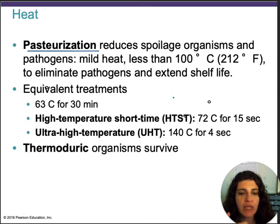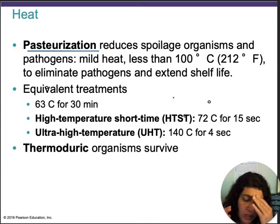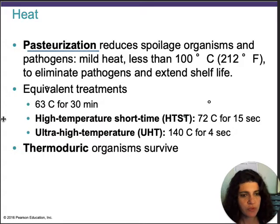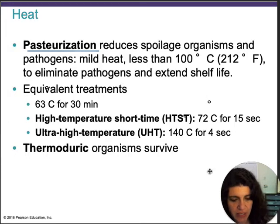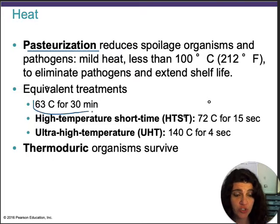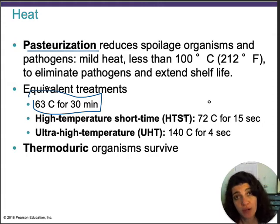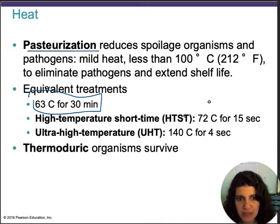Another method that applies heat is pasteurization. Pasteurization is used to reduce spoilage in food by applying mild heat — less than 100°C for a moderate time. For example, milk can be treated at around 63°C for 30 minutes. This is a proper pasteurization process that eliminates most pathogenic microbes and extends shelf life, but does not destroy all microbes.